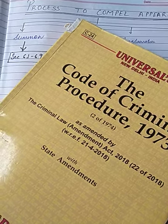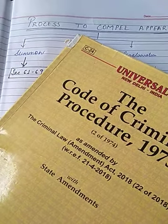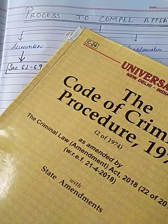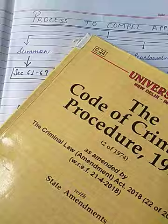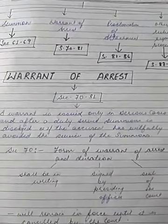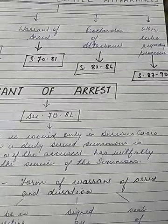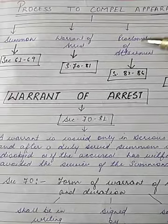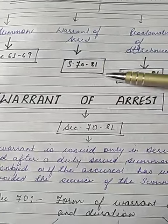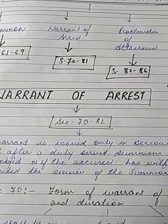Hello everyone, welcome back to my channel, Soumya Jha Loin Vains. In our earlier video we were talking about the process to compel appearances. We already covered summons from section 61 to 69. In this video we will continue with warrant of arrest. There are basically four parts: summon, warrant of arrest, proclamation of attachment, and other rules regarding process. Today we will talk about section 70 to 81.